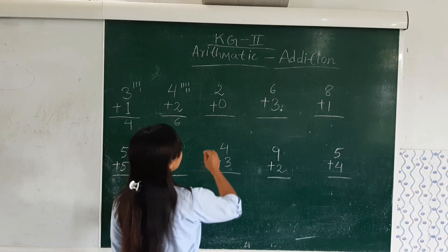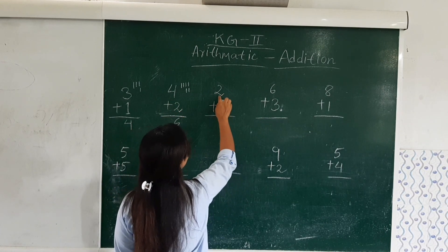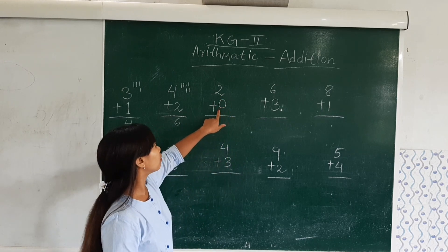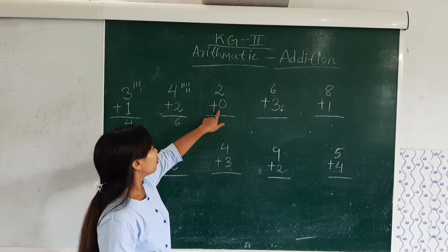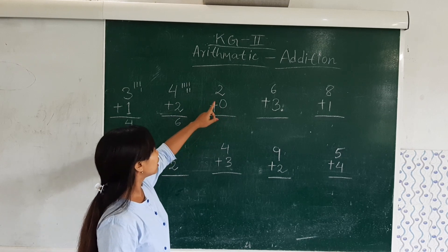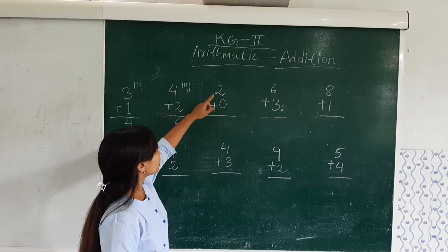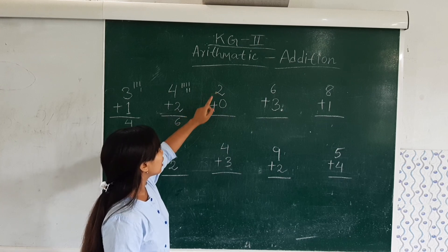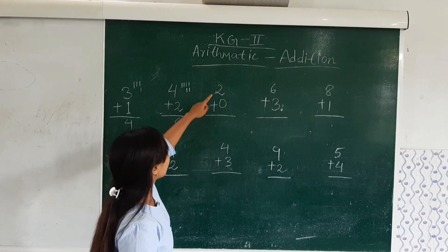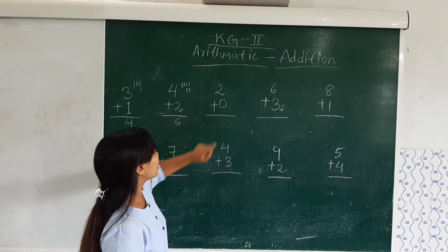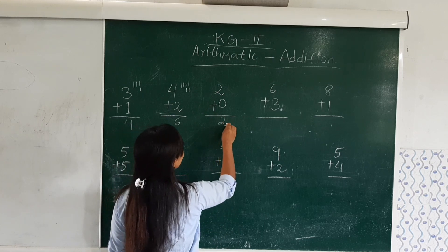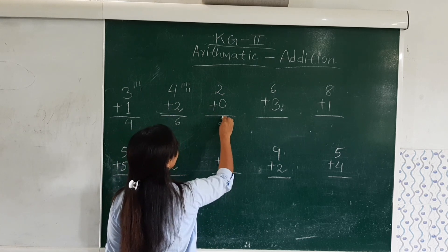Now the next one: 2 plus 0. Here the number is 0. I want to remind you — whenever a number comes with 0, the number will remain the same. So here we have 2 plus 0, and the number will remain the same. So it will be 2.